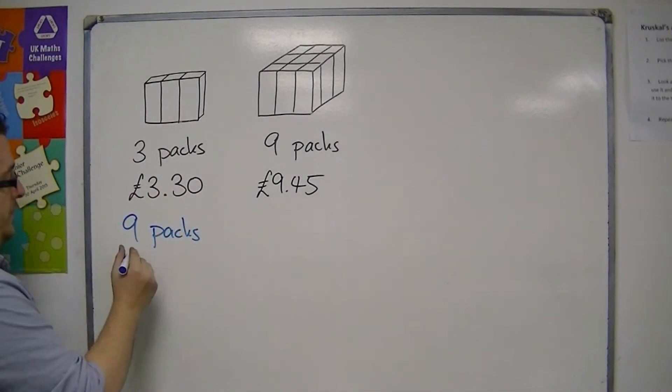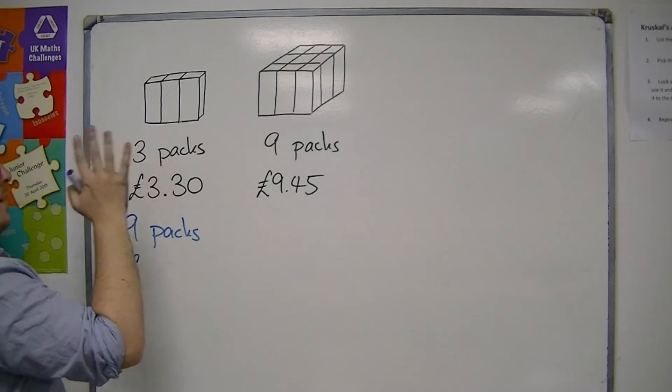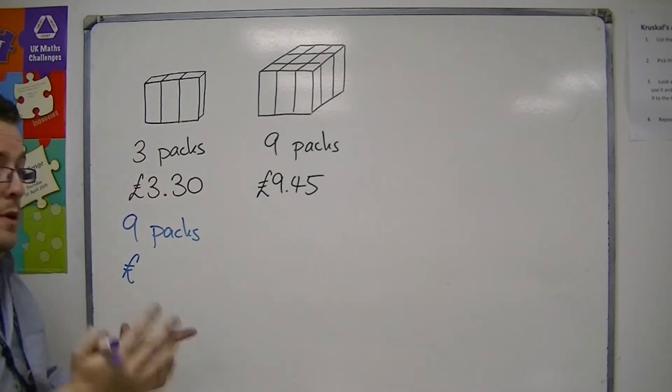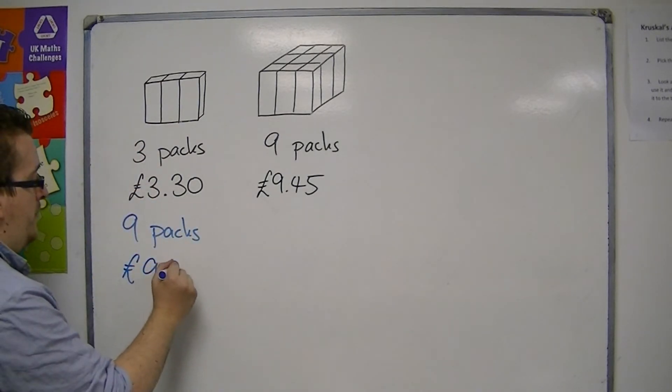so I buy three of these, then I would be multiplying the £3.30 by three, and so that would be £9.90.